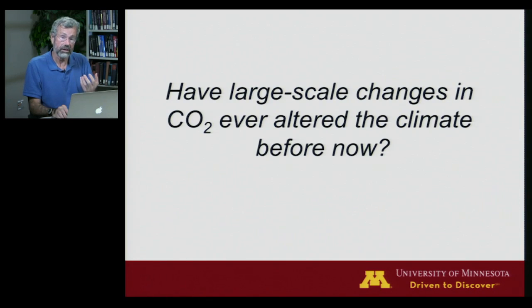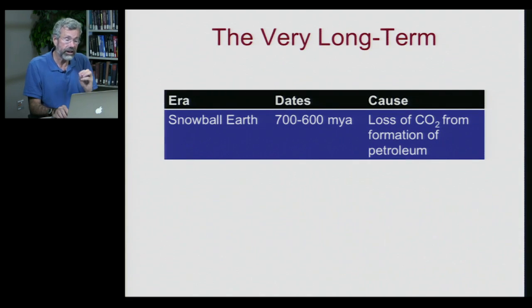We've seen that the normal variation in carbon dioxide is associated with ice ages in North America over the last few hundred thousand years, but what lessons can we take from even longer time spans? Have there been large-scale changes in CO2 even greater than seen in the last million years, and have they altered the climate? Looking at the very, very long term, there was an extraordinary period now referred to as Snowball Earth.